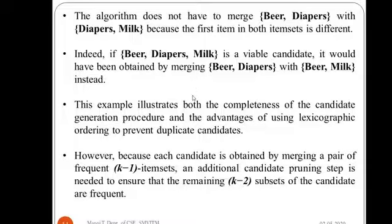The F(k-1) × F(k-1) method illustrates both the completeness of the candidate generation procedure and the advantages of using lexicographic ordering to prevent duplicate candidates. All three requirements are satisfied in this method. This brings us to the end of the lecture on candidate generation procedures. Thank you.